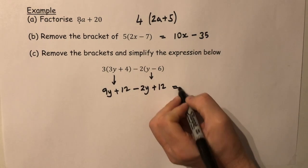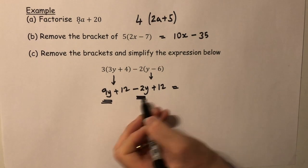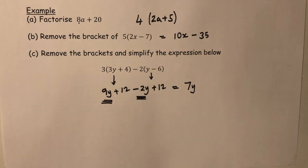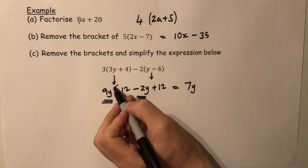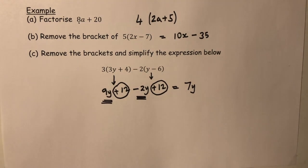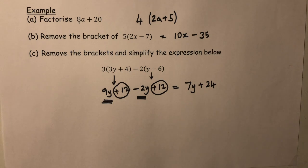All we have to do now is tidy that up. We have got 9y's and we're told to take 2y's, so that is 7y's. We have 12 and we're told to add 12, so therefore we've got plus 24, and that's simplified. Question finished.